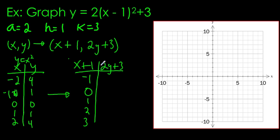I'm going to take my y values, multiply them by 2, and then add 3. So 2 times 4 is 8, plus 3 is 11. 2 times 1 is 2, plus 3 is 5. 0 times 2 plus 3 is 3. And then 1 times 2 is 5 again, and then it repeats.